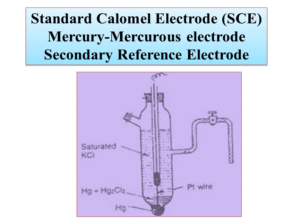Generally, we go for the second electrode, called the standard calomel electrode, which is also called mercury/mercurous chloride, and is used as a secondary reference electrode. Mercurous chloride is called calomel, so it is used as the calomel electrode.